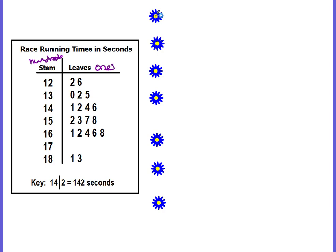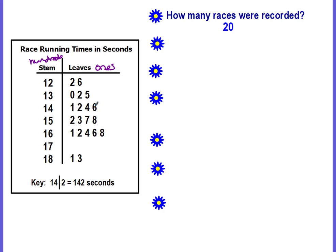How many races were recorded? Did you get twenty? All you had to do was count the number of leaves. There were a total of twenty leaves.